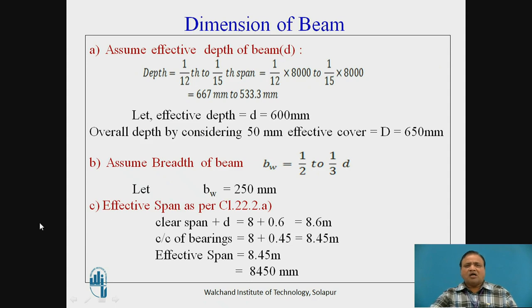First of all, we are supposed to assume effective depth of the beam based on control for deflection. The depth should vary between 1/12th to 1/15th of the span. So available span is 8 meter, therefore 1/12th works out to be 667 and 1/15th works out to be 533. Let us assume the effective depth be 600 mm. Overall depth by considering 50 mm effective cover will be 650 mm.